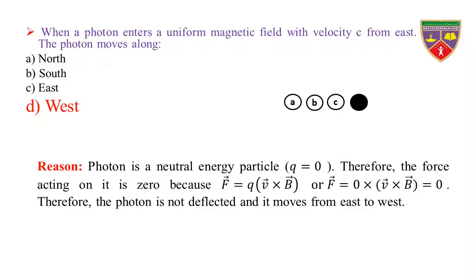Reason: Photon is a neutral energy particle. So Q is equal to zero. Therefore, the force acting on it is zero because F = Q × (V × B) = 0 × (V × B) = 0. So the photon is not deflected as it moves from east to west. Hence, the photon moves along west.